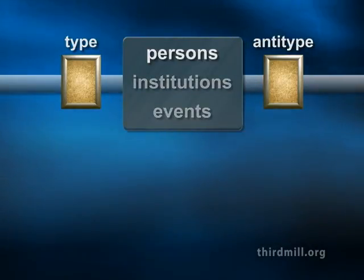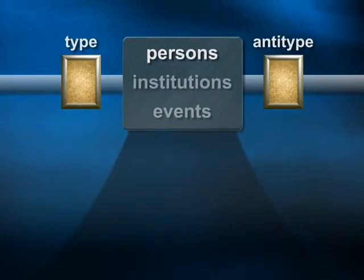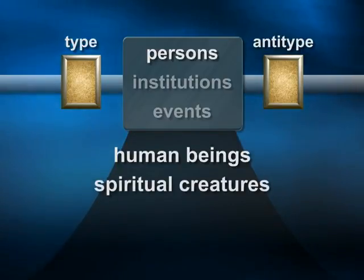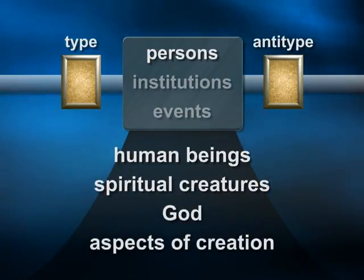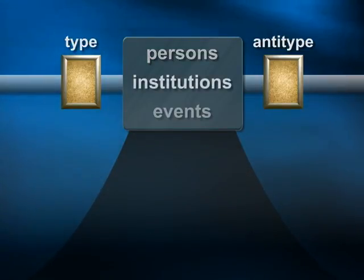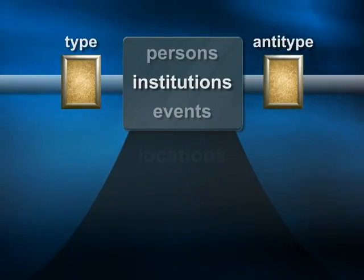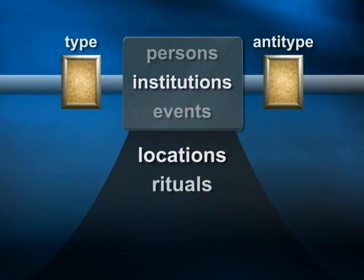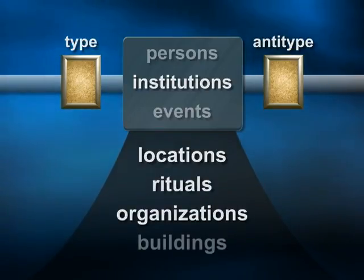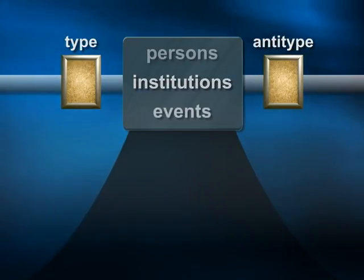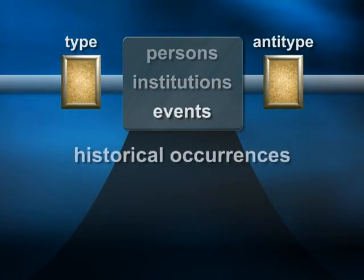By persons we mean characters that appear in the scriptures, like significant human characters, spiritual creatures, God, and on rare occasions other aspects of creation that are personified. By institutions we mean enduring historical realities, like significant real estate or locations of lasting significance, rituals, organizations, important buildings, and the like. And by events, we simply mean significant historical occurrences — things that happened. Types and anti-types can consist of every combination of these three elements.